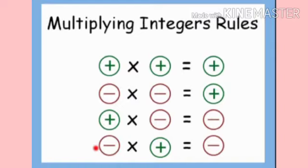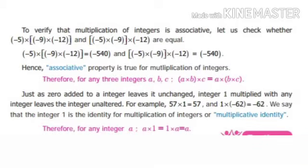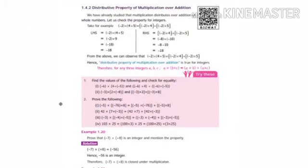Multiplication of any two integers of the same sign, whether they may be positive or negative, always gives a positive integer, and multiplying two integers of different sign always gives a negative product. We also saw that the properties — closure, commutative, associative — are true for multiplication of integers, and the distributive property of multiplication over addition holds for multiplication of integers.